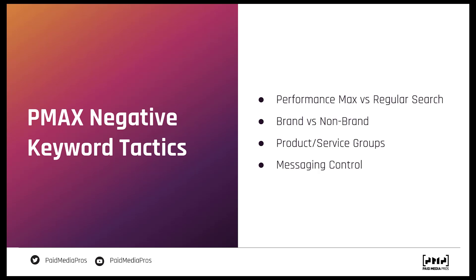We already had account level negatives, so what's the reason for needing campaign level? First, now we can start to control Performance Max compared to regular search campaigns. It's always been a struggle to make sure Performance Max campaigns don't cannibalize your search campaigns. Search has a lot more control, more insights, more you can do with it. Many advertisers prefer having the majority of their budget in search, with Performance Max as a supporting character. Now with campaign level negatives, you don't have to worry about that as much — just add the negative and you can query map your way to having all the traffic in the right campaign.